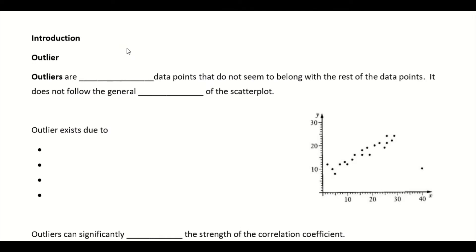Let's look at the definition of outlier first. Outliers are extreme data points that do not seem to belong with the rest of the data points. Basically, it's a data point that does not follow the general trend of the scatter plot. For example, when you look at this scatter plot, this whole bunch of data points are quite close to each other and show the same trend — when your EV increases, your RV also increases. But there's one point that doesn't belong to the rest and doesn't follow that trend. That is our outlier.